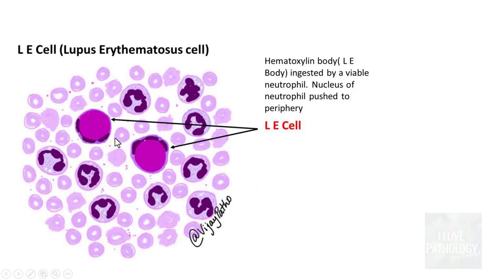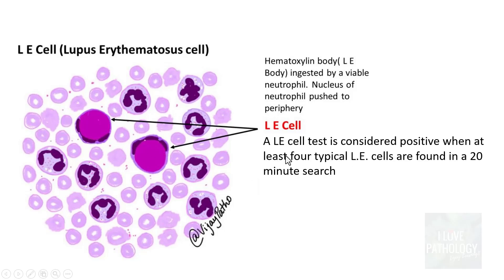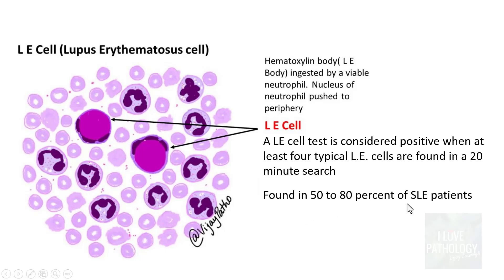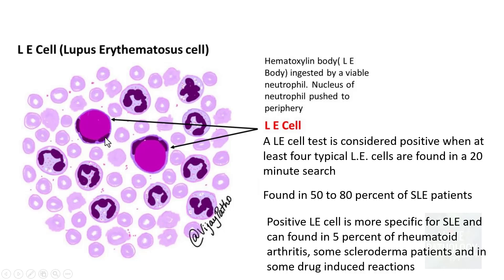An LE cell result is considered positive when you find at least four typical lupus erythematosus cells — you must search for at least 20 minutes. LE cells are found in around 50 to 80% of SLE patients. A positive LE cell is more specific for SLE, but can also be found in 5% of rheumatoid arthritis cases, some scleroderma patients, and in some drug-induced reactions. If found, it is most often suggestive of systemic lupus erythematosus.